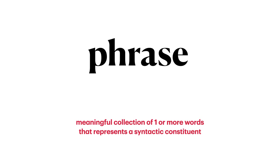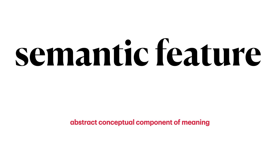The next item we look at is the phrase. When we get to phrases, we are now entering the realm of syntax. A phrase is a meaningful collection of one or more words that together represent a syntactic constituent. Finally, the last element we look at is the semantic feature. Semantic features may be somewhat more abstract than some of the other concepts we've examined. A semantic feature is an abstract conceptual component of meaning.